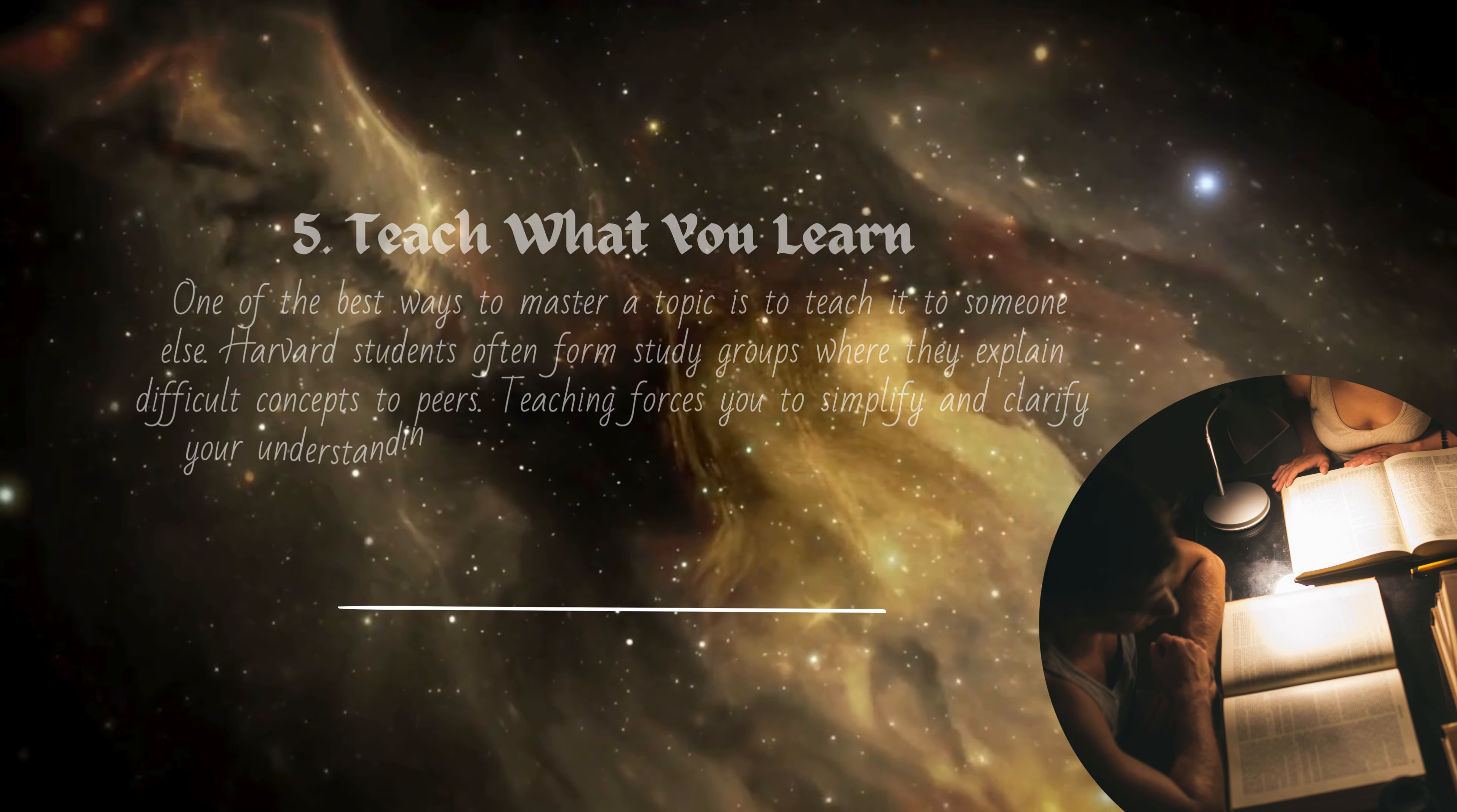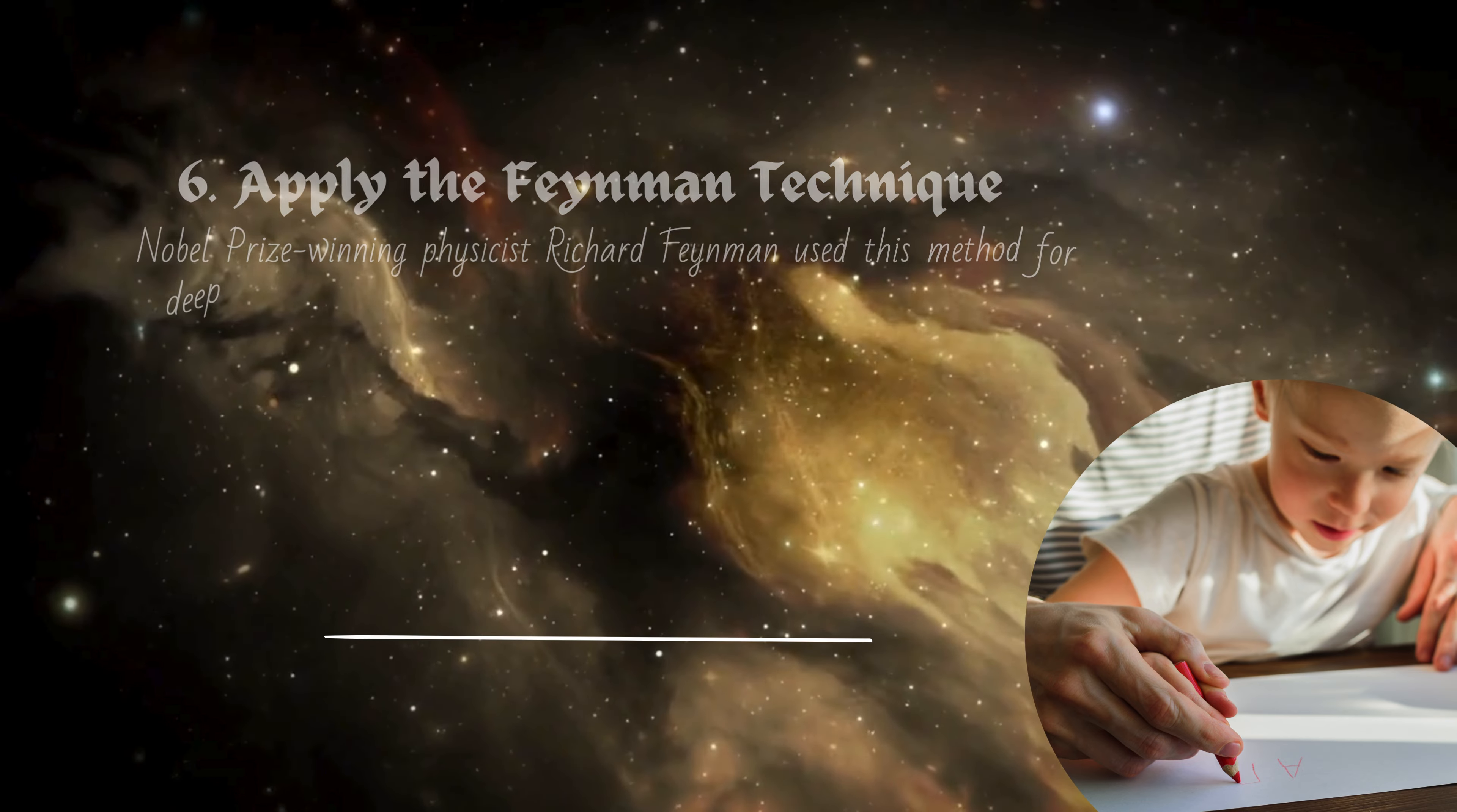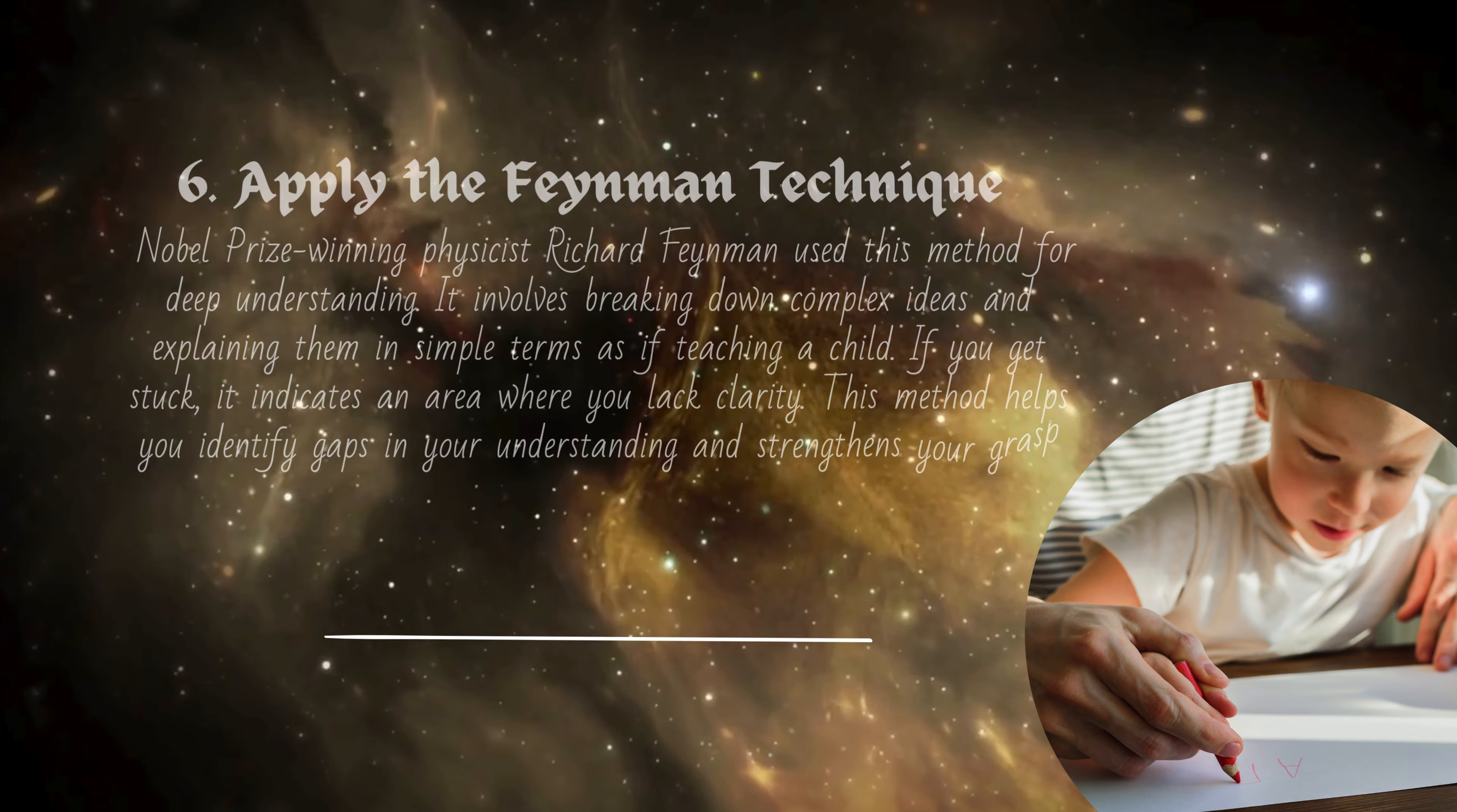Teaching forces you to simplify and clarify your understanding, which solidifies the material in your brain. Six: Apply the Feynman technique. Nobel Prize-winning physicist Richard Feynman used this method for deep understanding. It involves breaking down complex ideas and explaining them in simple terms, as if teaching a child. If you get stuck, it indicates an area where you lack clarity. This method helps you identify gaps in your understanding and strengthens your grasp of the material.